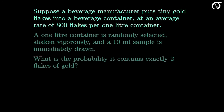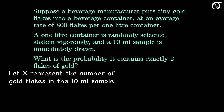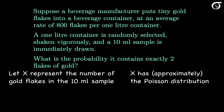Suppose a beverage manufacturer, as part of a marketing gimmick, puts tiny gold flakes into a beverage container at a rate of 800 flakes per 1-liter bottle. A 1-liter bottle is randomly selected, shaken vigorously, and a 10-milliliter sample is immediately drawn. What is the probability it contains exactly 2 flakes of gold? We're counting occurrences of something in a volume, which suggests the Poisson distribution. Since the container is shaken vigorously, it's reasonable to assume the flakes are distributed randomly and independently throughout the liquid, at least approximately.